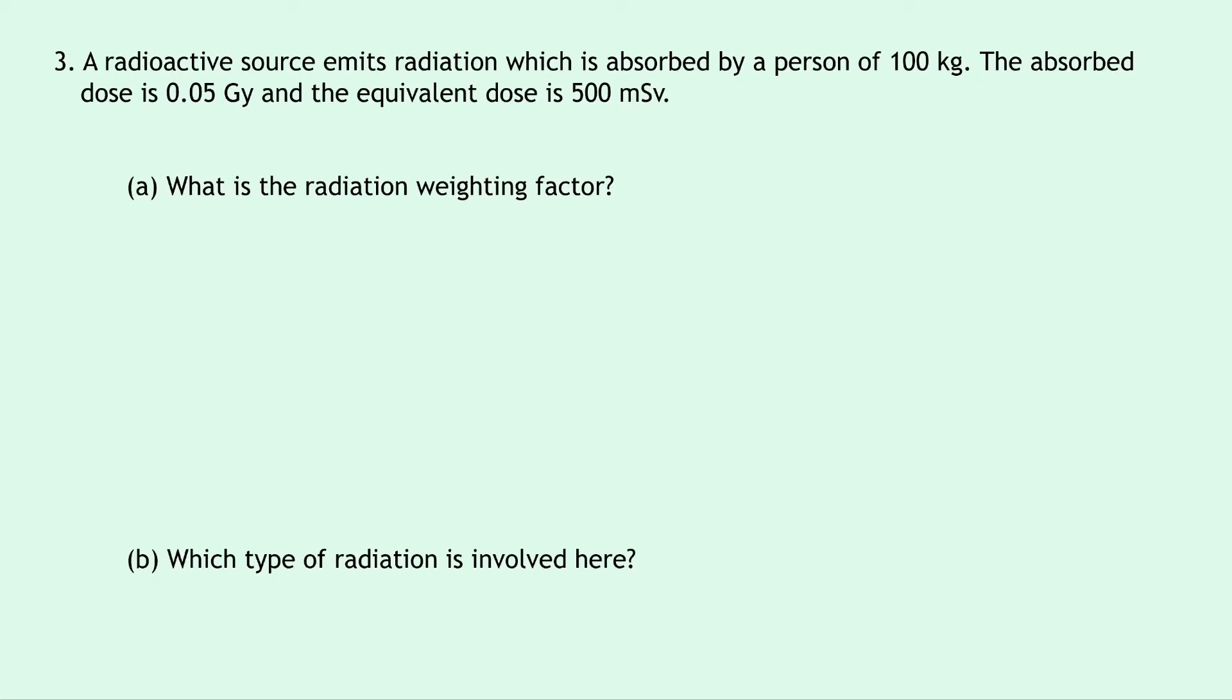Part A says what is the radiation weighting factor? Well, writing down what we know from the question, we're trying to find WR. We know the equivalent dose H is 500 millisieverts, which we need to convert into sieverts first. So this becomes 500 times 10 to the minus 3 sieverts. And the absorbed dose D is 0.05 grays.